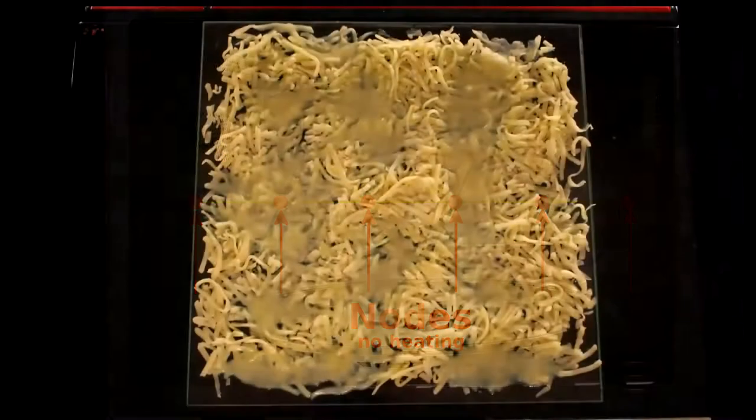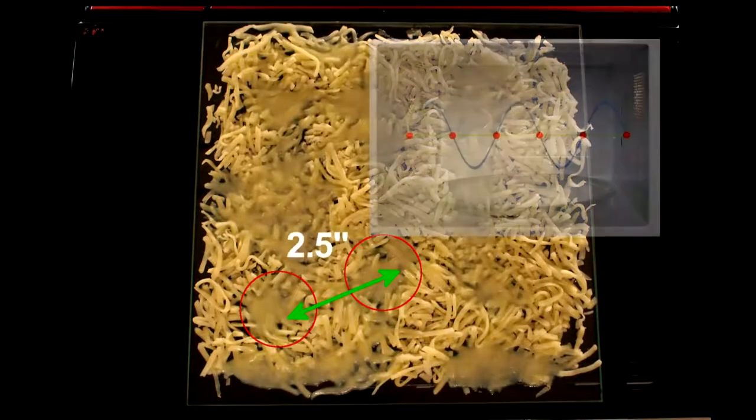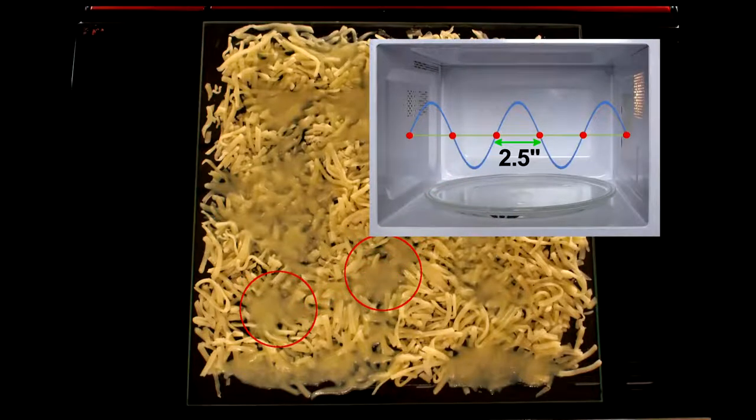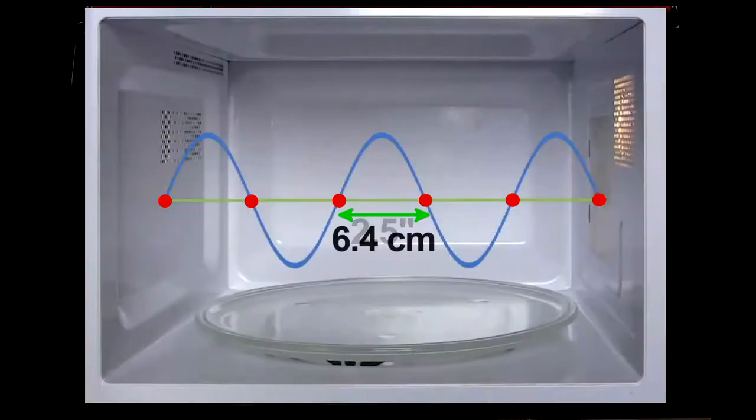If I measure the distance between melted cheese spots, I find about two and a half inches. That would be half the wavelength, the distance between nodes, and is pretty close to the actual wavelength of microwave radiation used.